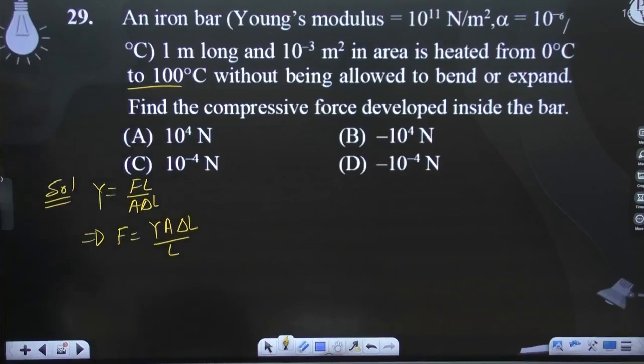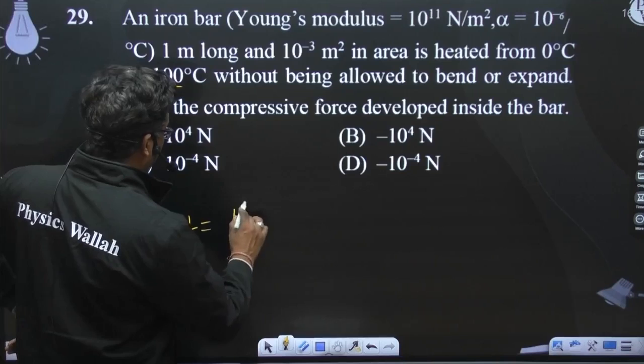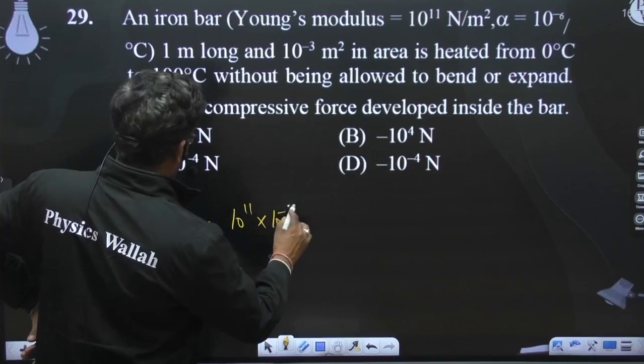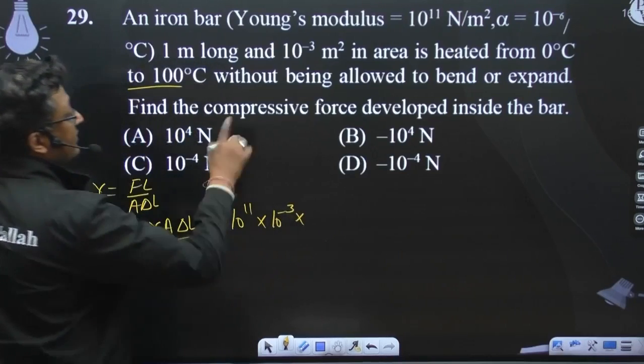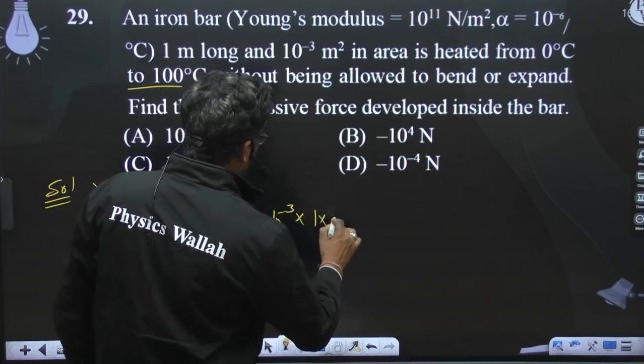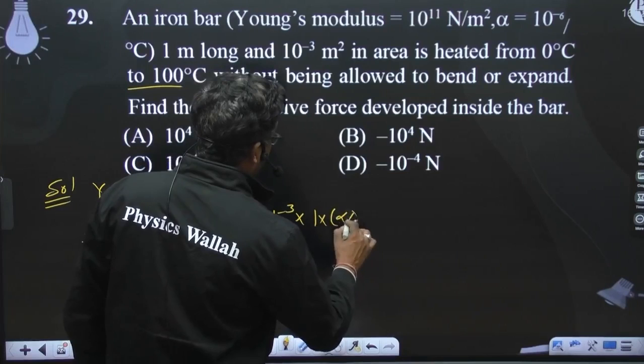Force is compressive. So when you put values in this case, Y is 10 to the power 11 into area of cross section 10 to the power minus 3. Change in length is nothing but L into alpha delta T.